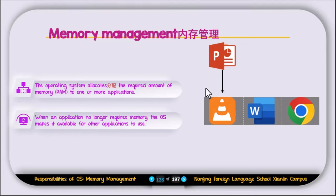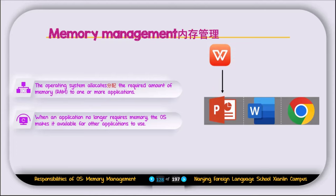For example, this is your RAM and you are working on three software applications: Google Chrome, Microsoft Word, and VLC Player. If you close one of those applications, the operating system will allocate that memory to the next program. For example, if you close Microsoft Word, the operating system moves it from memory and allocates that memory to the next program.